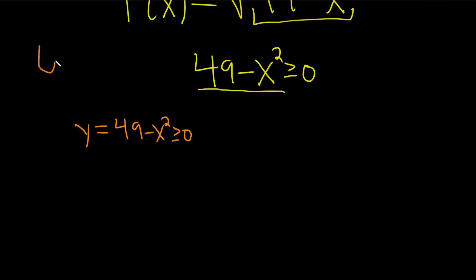...x squared is a parabola. Negative x squared is an upside-down parabola. And this bad boy here is an upside-down parabola shifted up by 49. So this is 49, and then here's this awesome graph like this.